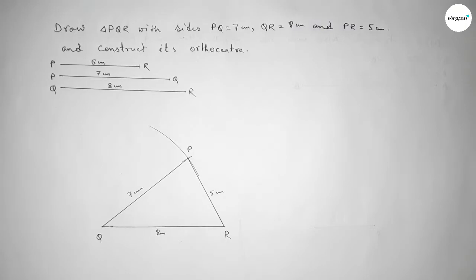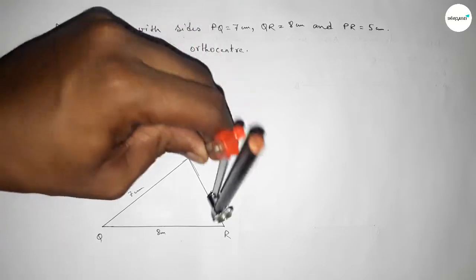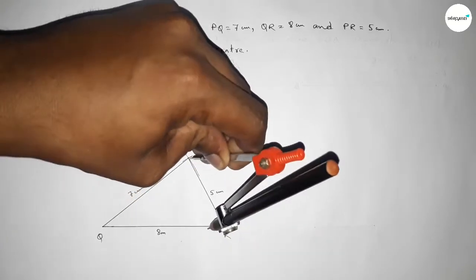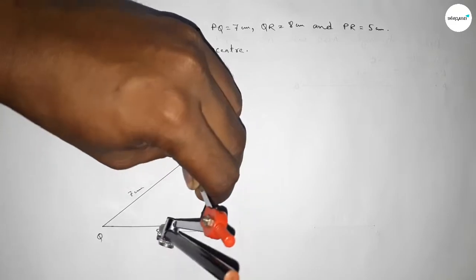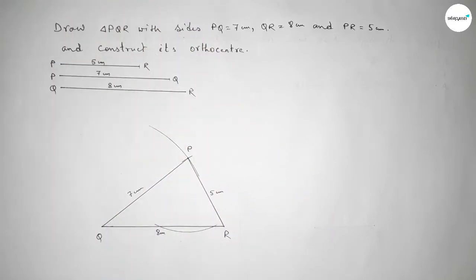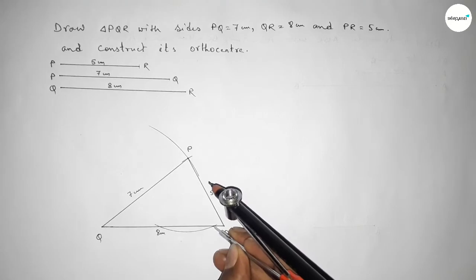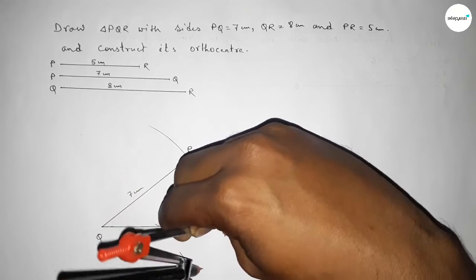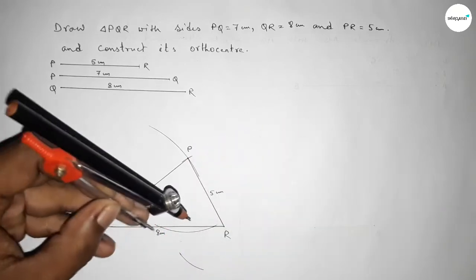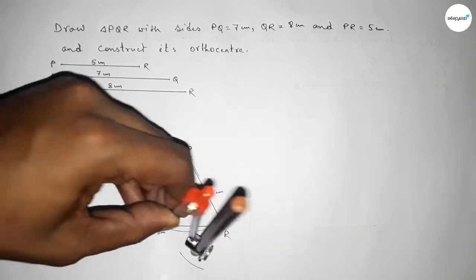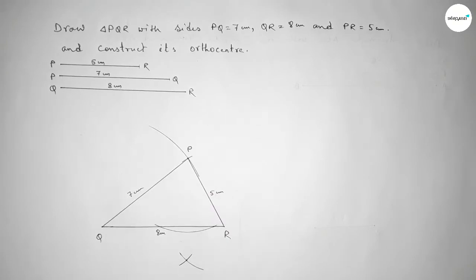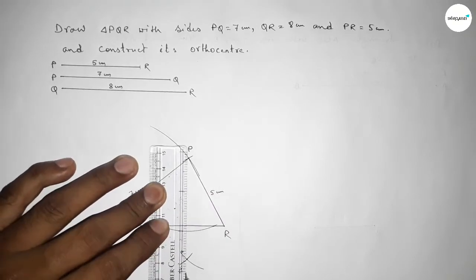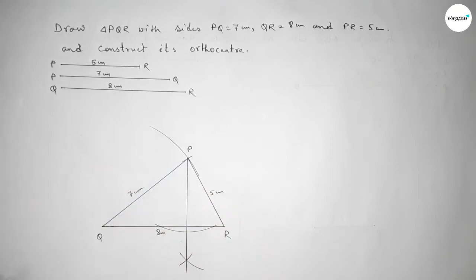Now we have to draw a perpendicular line from point P to line QR. Taking a length and drawing an arc, then drawing an arc again. Putting the compass here and taking greater than half, drawing an arc and cutting — both curves intersect at a point. Joining this gives the perpendicular on line QR. Taking this point as S.